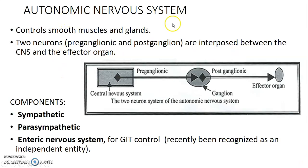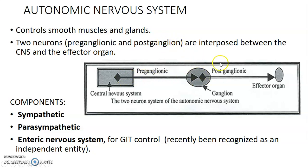The Autonomic Nervous System generally controls the smooth muscles and the glands in the body. We have two neurons involved: a pre-ganglionic neuron and a post-ganglionic neuron. A ganglion is a collection of neuronal cell bodies outside the central nervous system. These two neurons are interposed between the CNS and the effector organ.